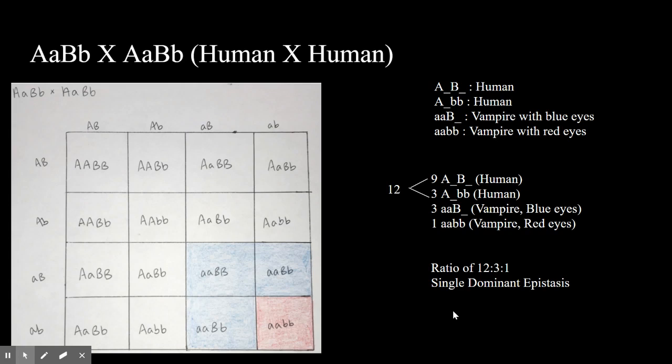For this example a blue shaded region represents a vampire with blue eyes, a red shaded region represents a vampire with red eyes, and no shading indicates a human.